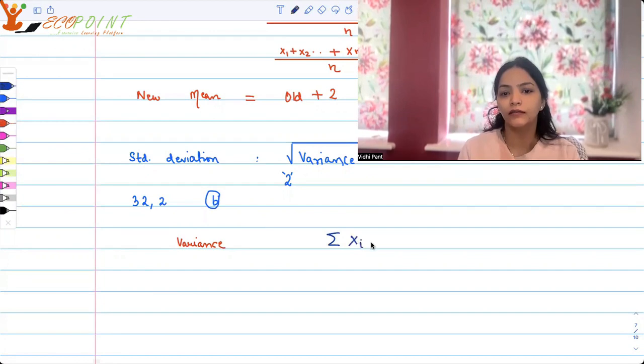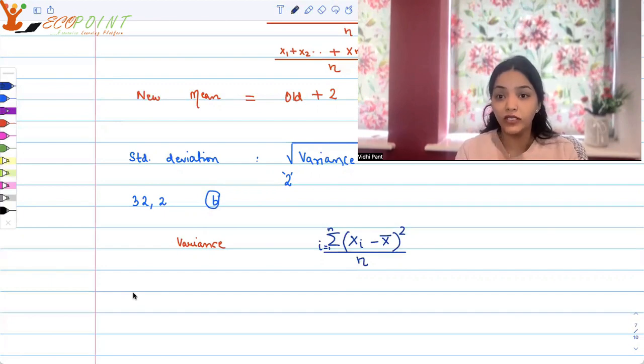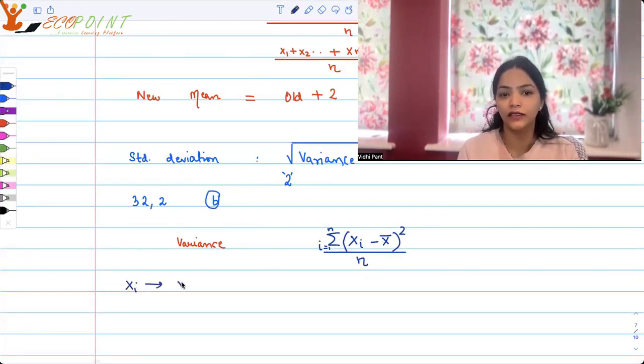summation xi minus x bar whole square, right. It is that upon the number of observations n. That's what is your variance, where of course i goes from 1 to n. So with the correction in the data, what has happened? Now your xi is basically not just xi, it is xi plus 2, and your x bar we just saw that would be actually x bar plus 2, the new one.